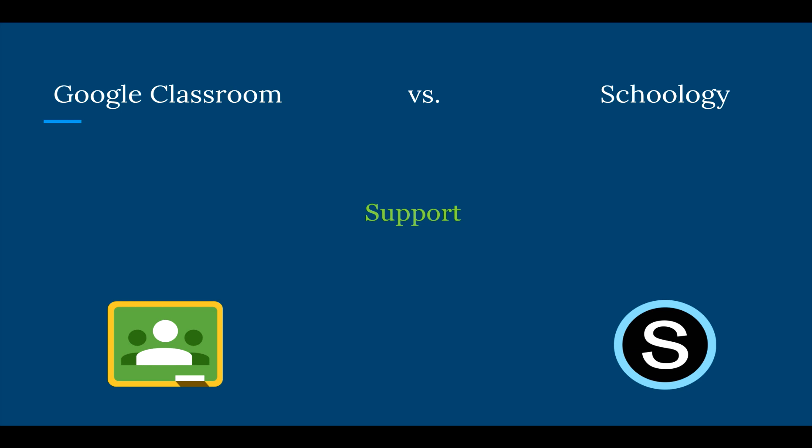The last area we're going to look at is support. It's inevitable that there will be technical issues when working with any learning management system. The edge in this one goes to Schoology again. Both platforms provide technical support through email. Schoology, though, also offers phone call support so you can speak one-on-one with a person. The biggest advantage Schoology has over Google Classroom is a training option — districts have the option to request system demos and training for staff, which Google Classroom does not offer.